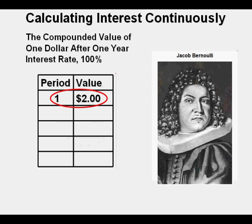The Swiss mathematician Jacob Bernoulli discovered this constant by studying a question about compound interest. One example is an account that starts with $1 and pays 100% interest per year. If the interest is credited once at the end of the year, that value will be $2. But if the interest is computed and added twice in the year, the $1 is multiplied by 1.5 twice, yielding 1 times 1.5 squared, which equals 2.25.